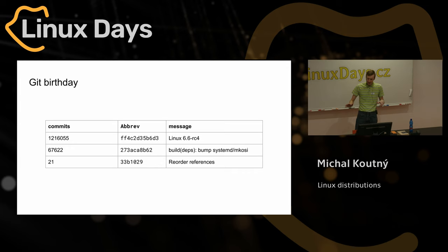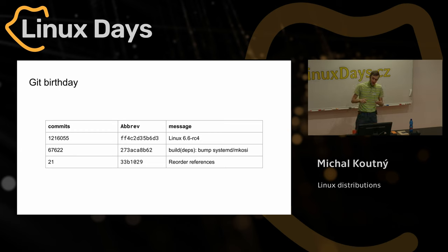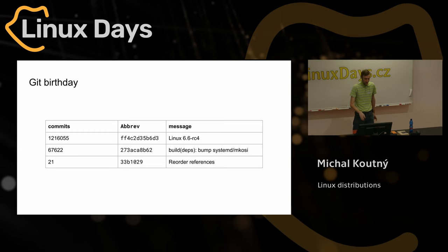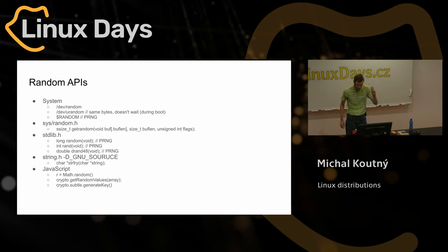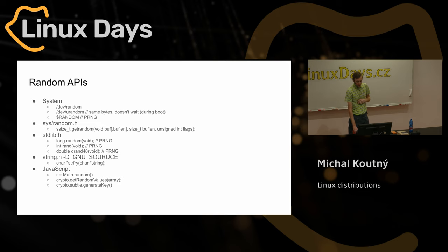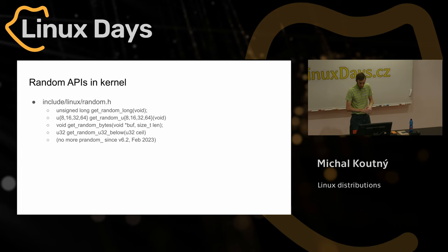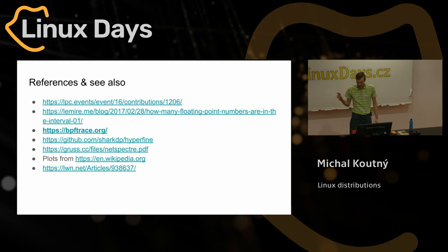There's also the birthday paradox or birthday attack. You may notice that larger repositories use longer abbreviated commit hashes, because there is a higher probability of hash collisions. Those were the random APIs you can use in C or JavaScript — and again, beware the difference between pseudorandom numbers and cryptographically secure pseudorandom numbers. These are kernel APIs from v6.2. There are references linked; I had many other ideas for this talk that didn't make it in, so you can check the links.